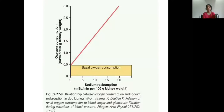This graph shows that sodium reabsorption is directly proportional to oxygen consumption. On the x-axis we have sodium reabsorption, and on the y-axis we have oxygen consumption. Whatever amount of sodium is reabsorbed is directly proportional to oxygen consumption, so as sodium reabsorption increases, oxygen consumption increases. At the bottom is shown a basal oxygen consumption, which is just for the basic metabolic needs of the kidney.